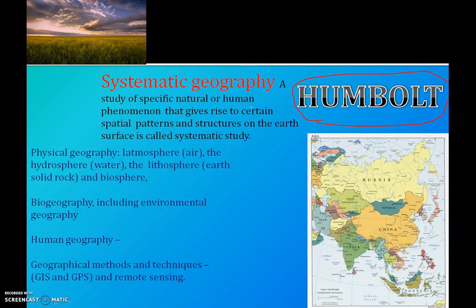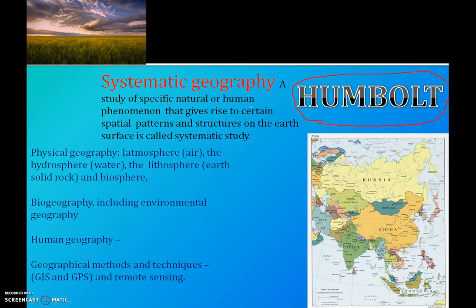Systematic geography is the study of specific geographical factors of the earth, as well as specific natural or human phenomena that give rise to certain spatial patterns and structures on the earth's surface. This is called systematic study.